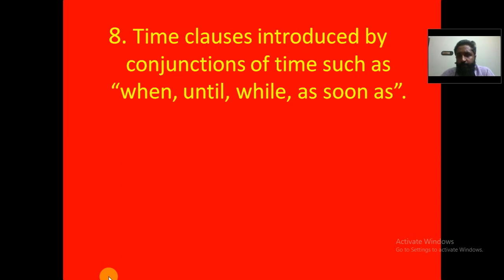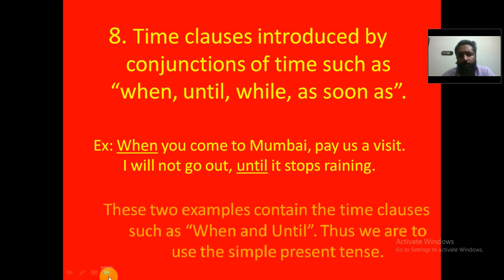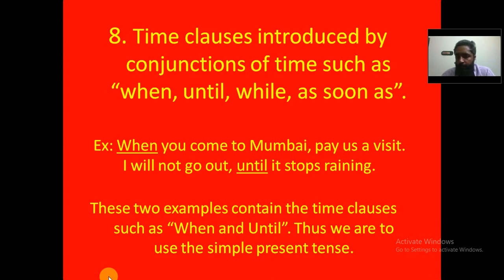We use the simple present tense in time clauses introduced by conjunctions of time such as 'when,' 'until,' 'while,' and 'as soon as.' Example: 'When you come to Mumbai, pay us a visit' — 'when' is a conjunction of time. Second example: 'I will not go out until it stops raining' — 'until' is also a conjunction of time.